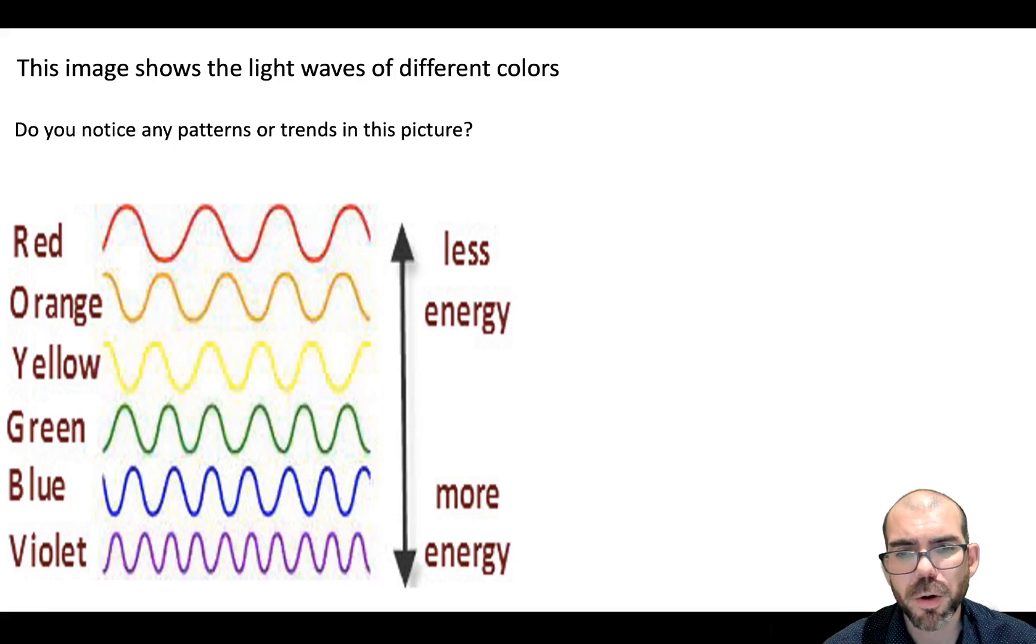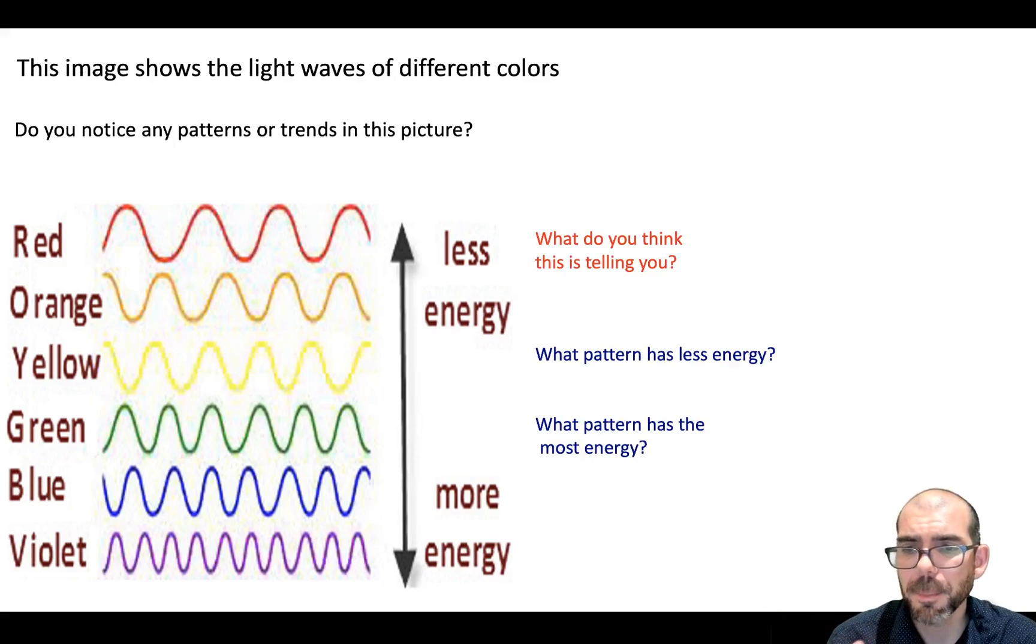Hopefully, you notice that red, orange, and yellow, they have a lower frequency and a very high wavelength. That's less energy in those light waves compared to greens, blues, and violets.